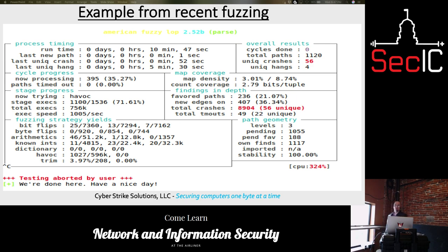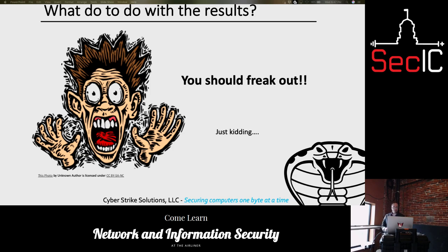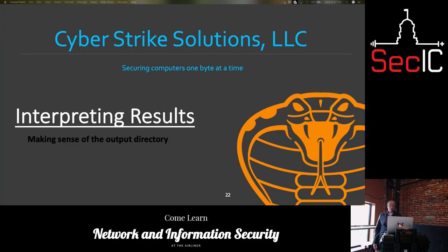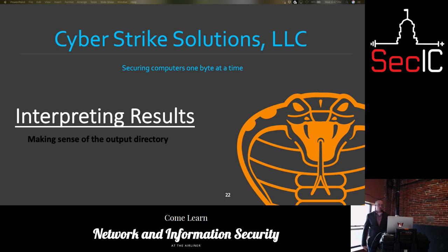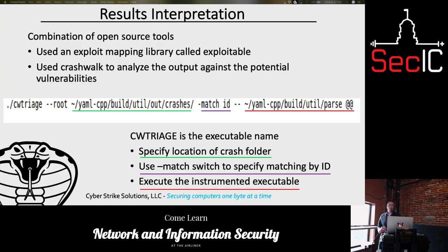Now that we've gone through the fuzzing, we have to figure out what to do with the results. Interpreting the results is an additional challenge — when you look at the output directory, it just looks like a bunch of files with no real rhyme or reason. There's some coding to determine which file belongs to which test case, but aside from that it doesn't provide real meaning.